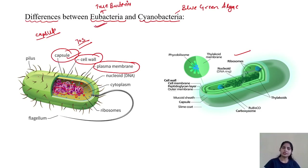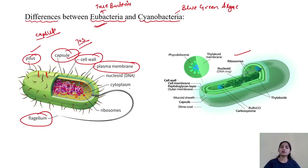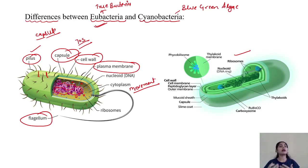Beside this, eubacteria also consist of cellular appendages on their surfaces, such as pili and flagella. Pili take part in conjugation — a type of horizontal gene transfer between gram-positive and gram-negative bacteria. Flagella are involved in movement, and they are sensitive to changing environmental conditions; on that basis, the movement can be either clockwise or counterclockwise. This is the basic structural organization of the prokaryotic organism.